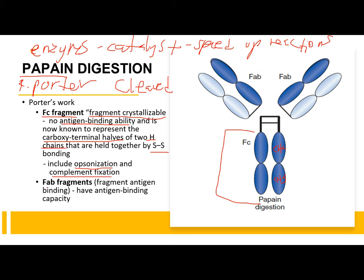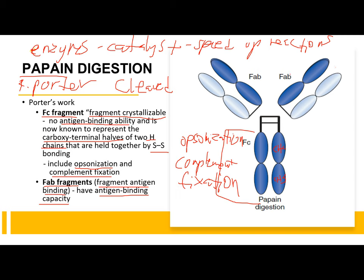Another fragment formed by papain digestion was the FAB fragment — the fragment antigen binding. The FAB has antigen binding capacity. So the FC stands for fragment crystallizable, with functions of opsonization and complement fixation; the FAB stands for fragment antigen binding, with antigen binding capacity.